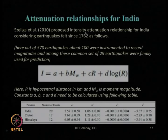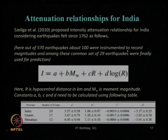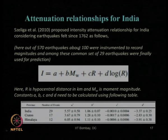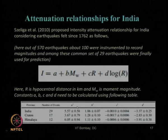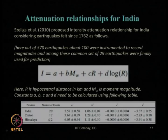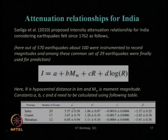Zelliga et al. considered all earthquakes from 1762 to 2009 — about 570 earthquakes, of which about 100 were instrumented (recent earthquakes) and the remaining were non-instrumented (mostly intensity-based, based on observed damage). From these, 29 earthquakes were finally used to develop the empirical prediction relationship, where r is hypocentral distance in kilometers, mw is moment magnitude, and a, b, c, d are constants. These constants are proposed for different regions: entire India, the Cratonic region, and the Himalayan region.